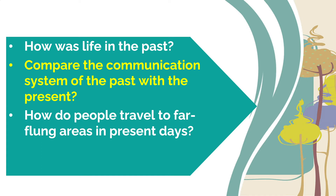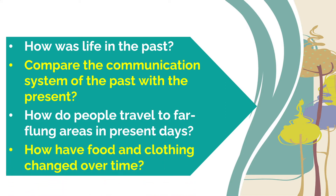How do people travel to far-flung areas in present days? Through cars, buses, and aeroplanes — that is how people travel today. How have food and clothing changed over time? People now prefer processed food, whereas in older times they liked fresh fruits and vegetables. Clothing has also changed — in old days there were warm clothes because there were no heating systems, and light clothes because there were no cooling systems. Now, with proper heating and cooling systems, there is less seasonal effect on clothing.